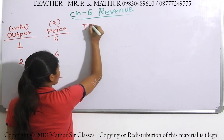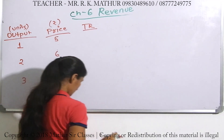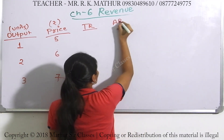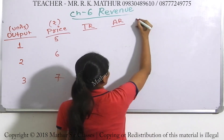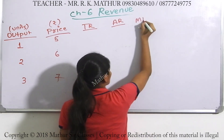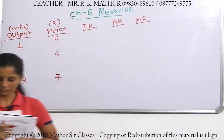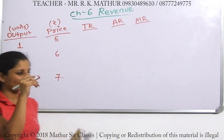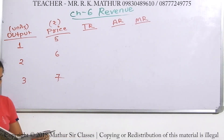So what will be your total revenue, what will be your average revenue, and what will be your marginal revenue? How do you calculate it in the exam? How do you calculate the average revenue and marginal revenue?